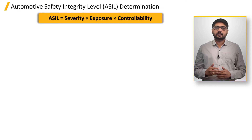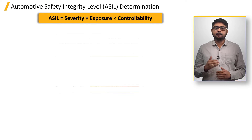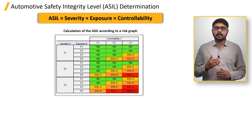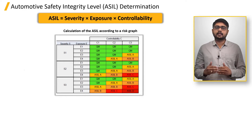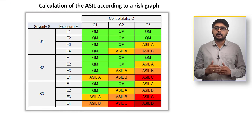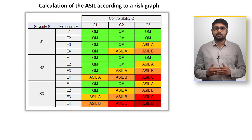ASIL is categorized into four levels: A, B, C, and D. Hazards that do not fall within these categories are classified as Quality Management, QM.